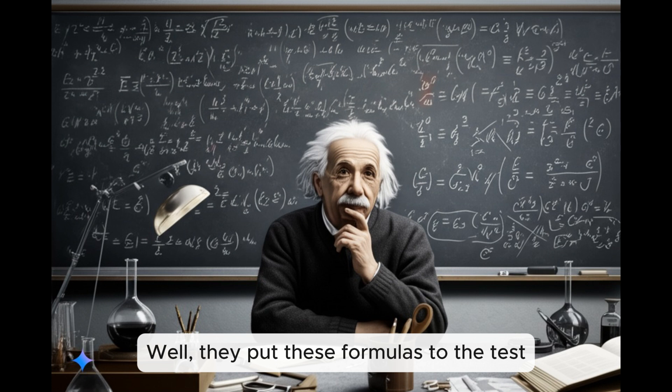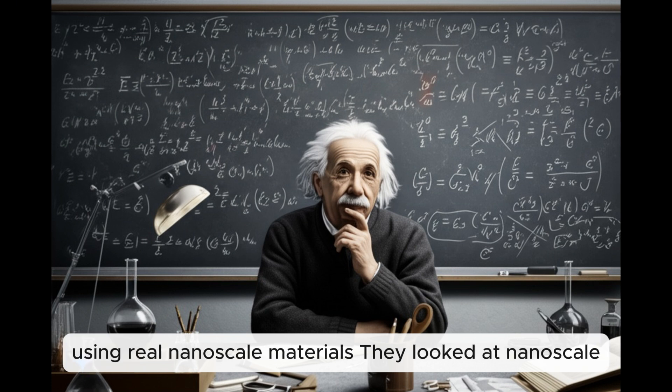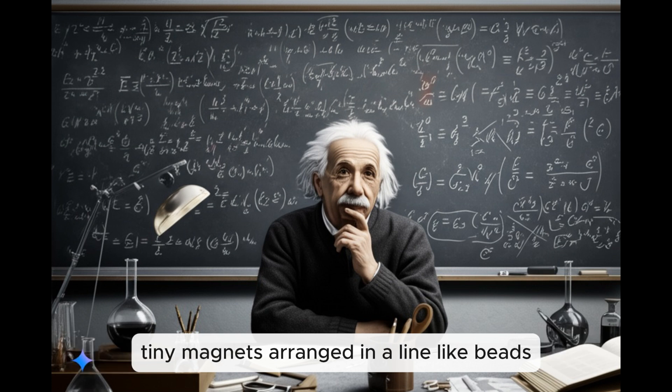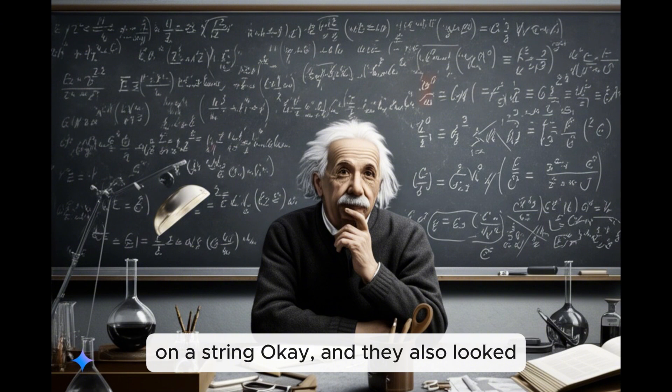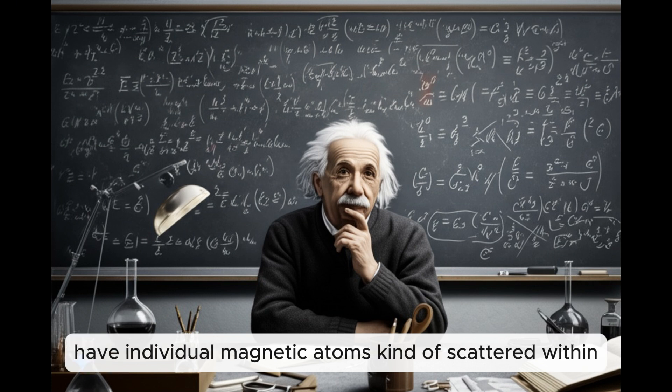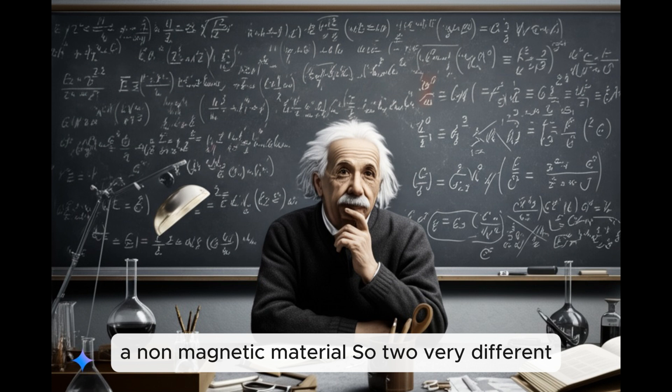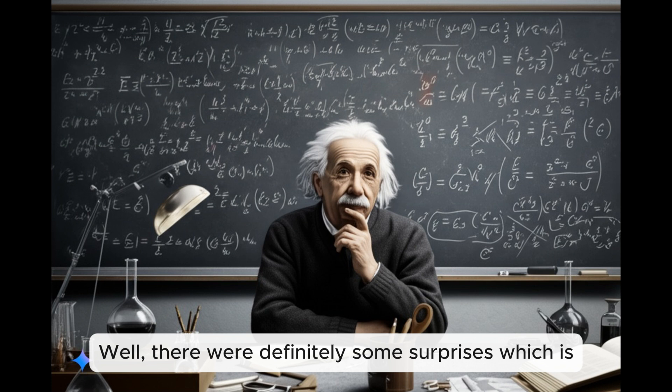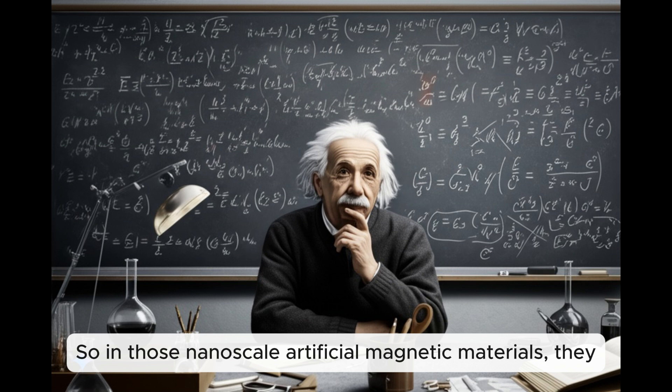So they have these formulas, but how do they know they actually work? How do they test them out? Well, they put these formulas to the test using real nanoscale materials. They looked at nanoscale artificial magnetic materials, which are basically like tiny magnets arranged in a line, like beads on a string. And they also looked at dilute magnetic alloys, which is where you have individual magnetic atoms kind of scattered within a non-magnetic material. So two very different types of materials, but both at that nanoscale level.